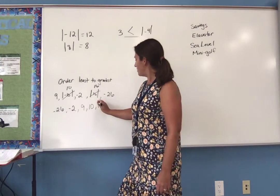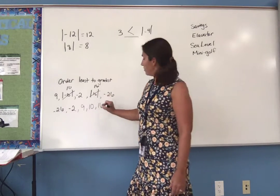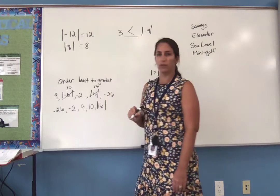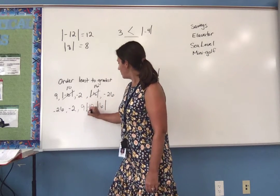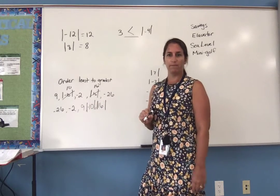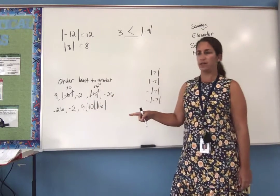And then if I want, I could rewrite these numbers that had absolute values as they were written. So this was really the absolute value of 16, and this 10 was actually the absolute value of negative 10. So now my numbers are written in order from least to greatest.